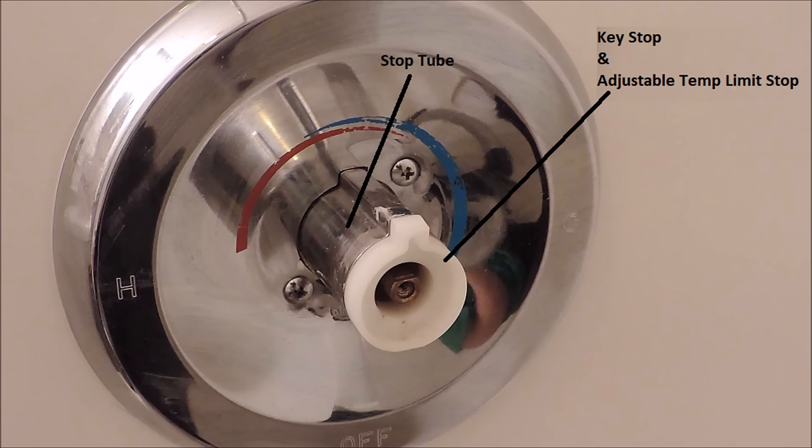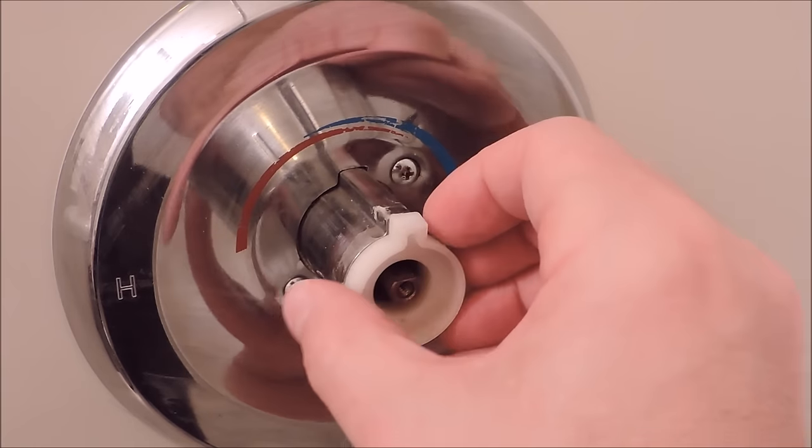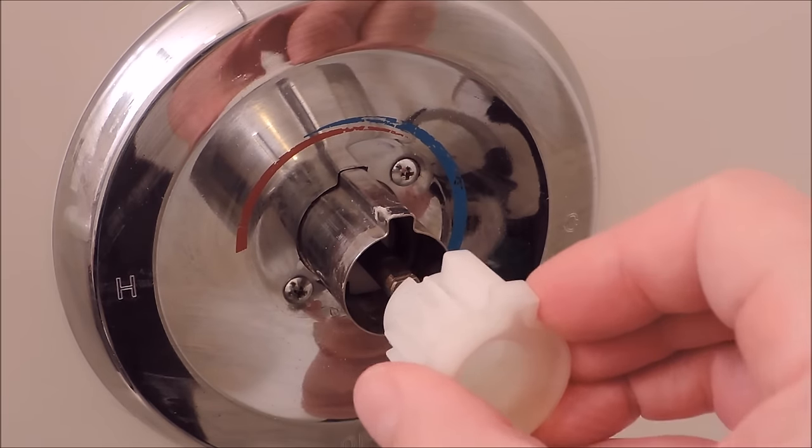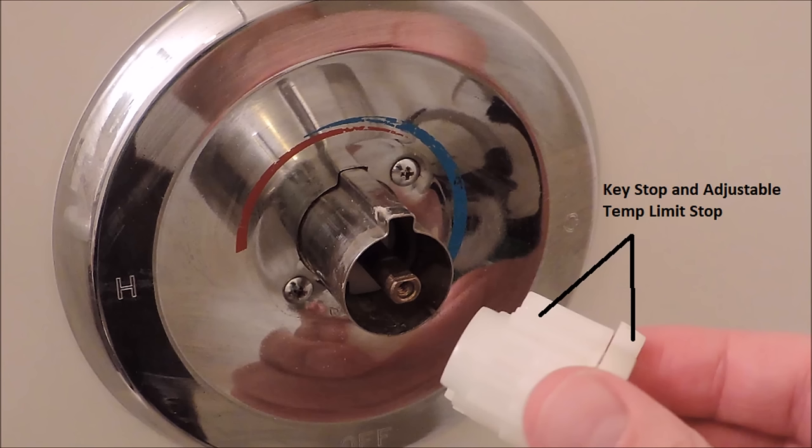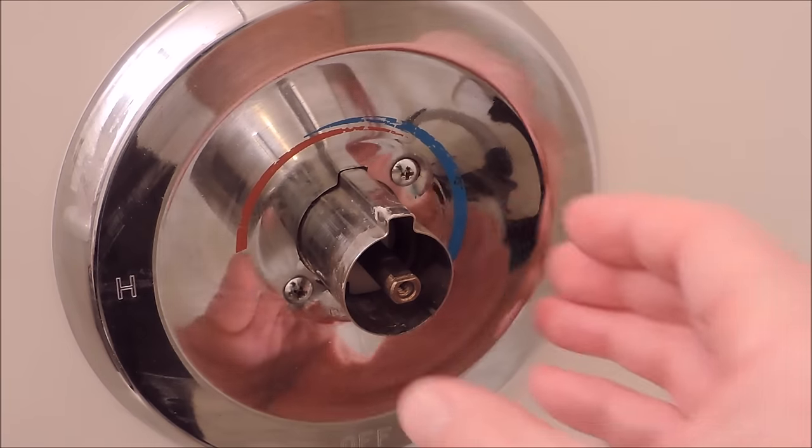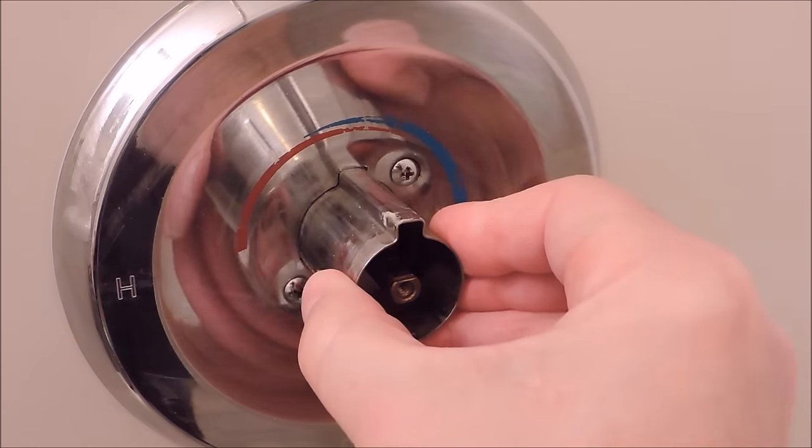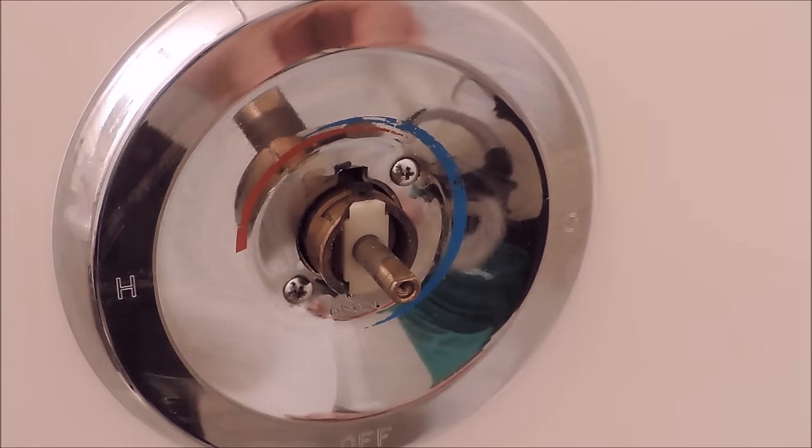Now you see the stop tube, the key stop, and the adjustable temperature limit stop. Let's remove that, and I'm going to explain a little more now. You can put the key stop and the adjustable temperature limit stop in certain configurations, which will limit the handle from going too far left and pushing out too hot water if you have elderly or infants in the household. Now let's remove the stop tube.